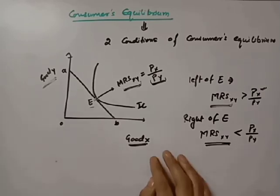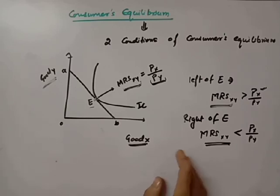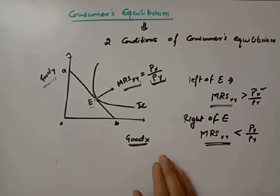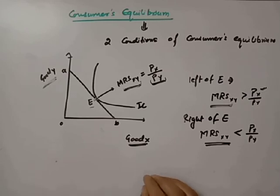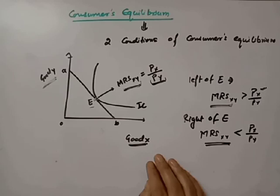So basically these are the two conditions that define the consumer's equilibrium: first, the slope of the indifference curve is equal to the slope of the budget line; and second, the indifference curve should be convex to the origin at the point of equilibrium. This topic is now over. I will meet you in the next class with a new topic. Till then, goodbye and take care.